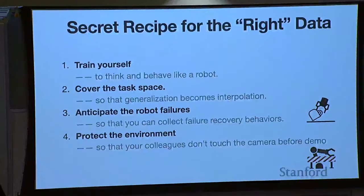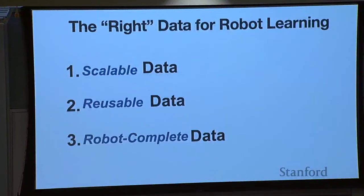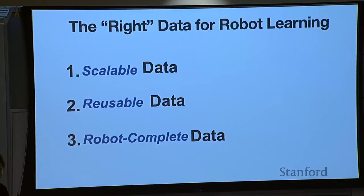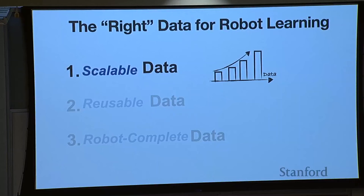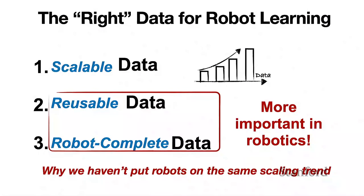Another way to think about these issues is that they really reflect the fact that we are not yet having the right data for robot learning. In particular, I'd like to highlight three aspects of data that we really need: data that is scalable, reusable, and robot-complete. I think in today's context of machine learning or big data, scale is the only thing that people emphasize. However, in robotics the story is quite different — having data that is reusable and robot-complete is oftentimes even more important than just scale. The lack of careful thought on these latter two requirements may be the true reason why we haven't put our robots on the same scaling trend as other ML fields.